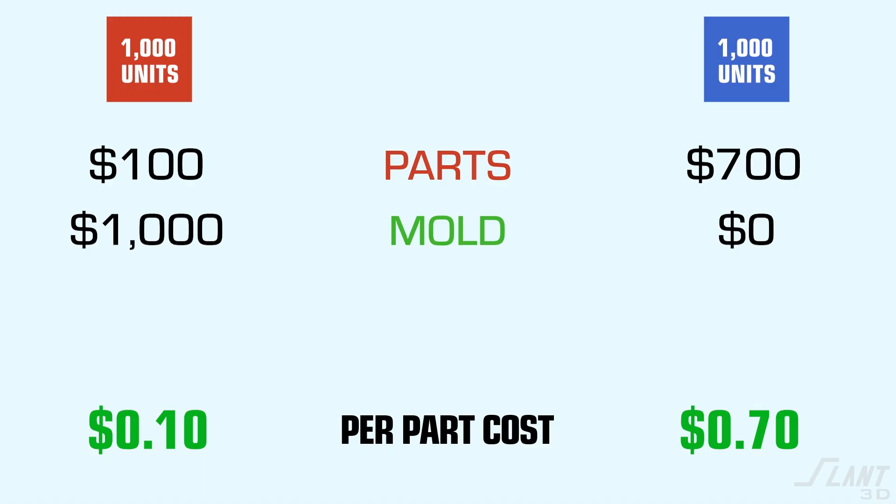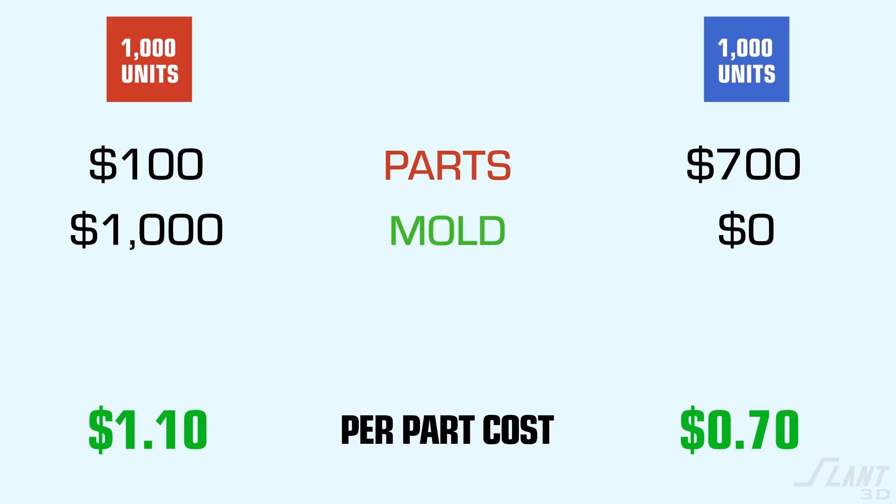If you made a thousand parts and the mold cost a thousand dollars, you have one dollar per part in order to pay off that mold. So every injection molded part is not 10 cents — it's actually a dollar ten. Now if you're comparing that to the 70 cents of the 3D printed part, the 3D printed part is much more cost effective.